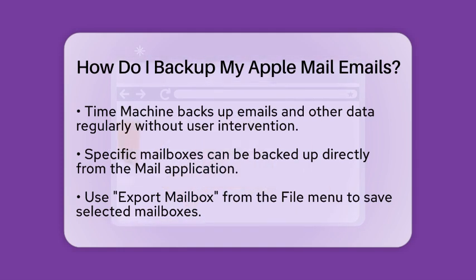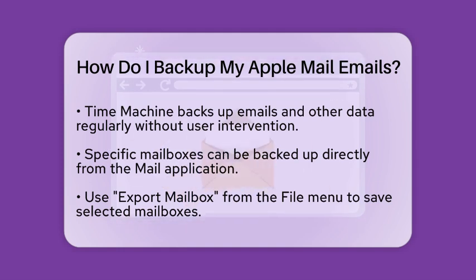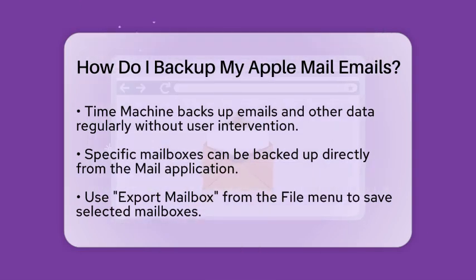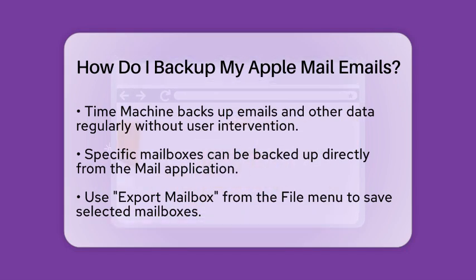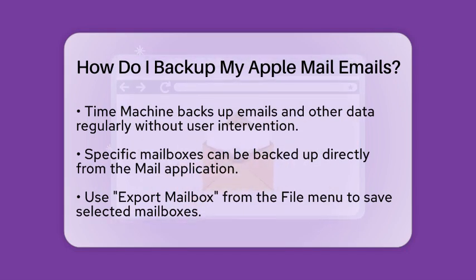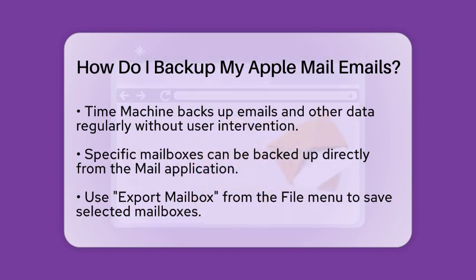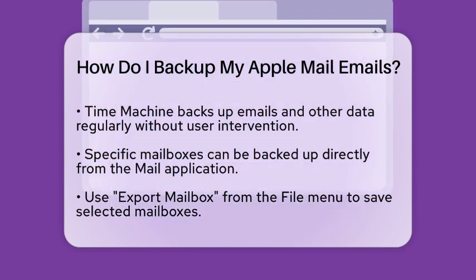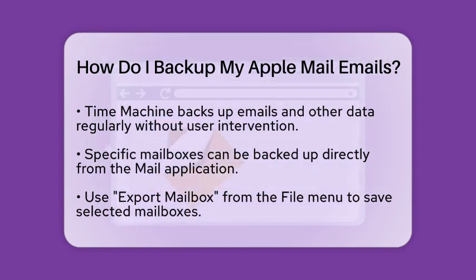If you want to backup specific mailboxes, you can do this directly from the Mail application. Open the Mail app, then go to the File menu and select Export Mailbox. Choose the mailbox you wish to export and pick a location to save it. This method allows you to focus on just the emails you want to keep.